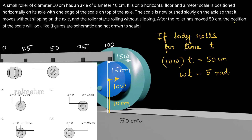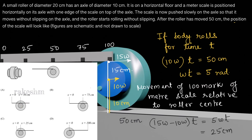What we need to find is how much the 100-mark of the meter scale has moved relative to the roller center. The relative velocity is 15ω minus 10ω = 5ω. The relative displacement is 5ω·t = 5 × (ω·t) = 5 × 5 = 25 centimeters.